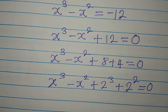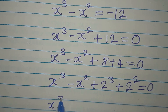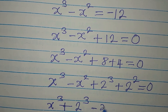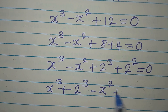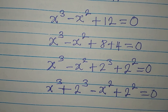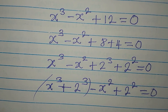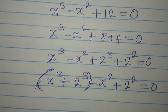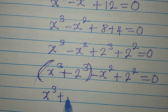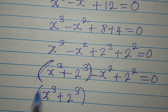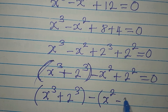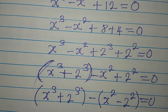Now let us regroup. We put x to the power of 3 and 2 to the power of 3 together, then minus x to the power of 2 plus 2 to the power of 2, all equal to 0. Putting them in brackets: we have x to the power of 3 plus 2 to the power of 3, then minus, open bracket, x to the power of 2 minus 2 to the power of 2. Everything is equal to 0.